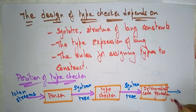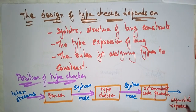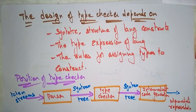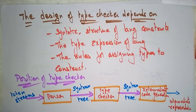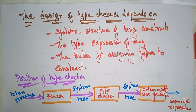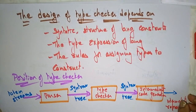After the type checker, intermediate code generation takes place, producing an intermediate representation. In summary, the type checker operates after the parser generates the syntax tree, verifying the syntactic structure of language constructs, checking type expressions, and ensuring the rules for assigning types to constructs are followed.